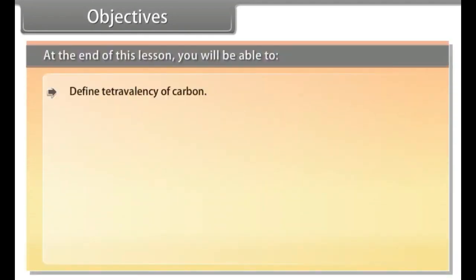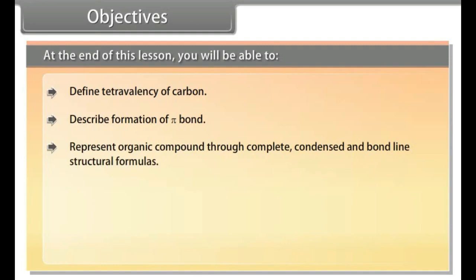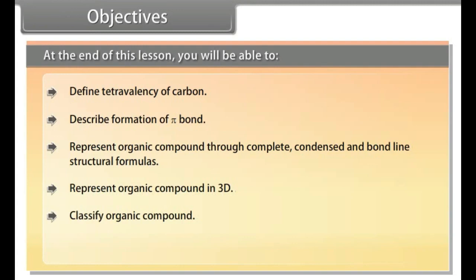At the end of this lesson, you will be able to: define tetravalency of carbon, describe formation of pi bond, represent organic compounds through complete, condensed and bond line structural formulas, represent organic compounds in 3D, classify organic compounds, and describe nomenclature of organic compounds.